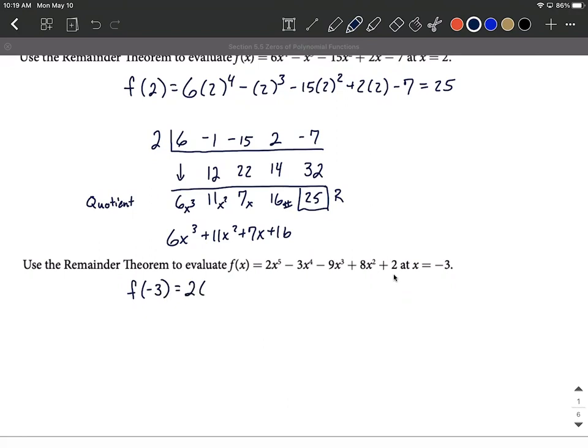So plugging that in, we have 2 times negative 3 to the fifth power minus 3 times negative 3 to the fourth power minus 9 times negative 3 to the third power plus 8 times negative 3 squared plus 2.